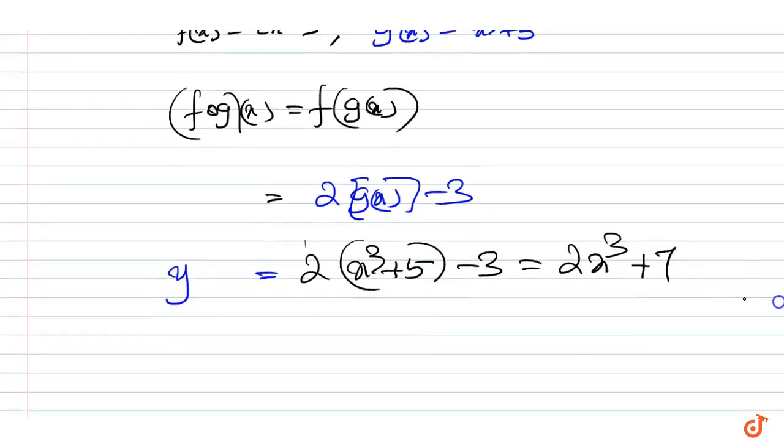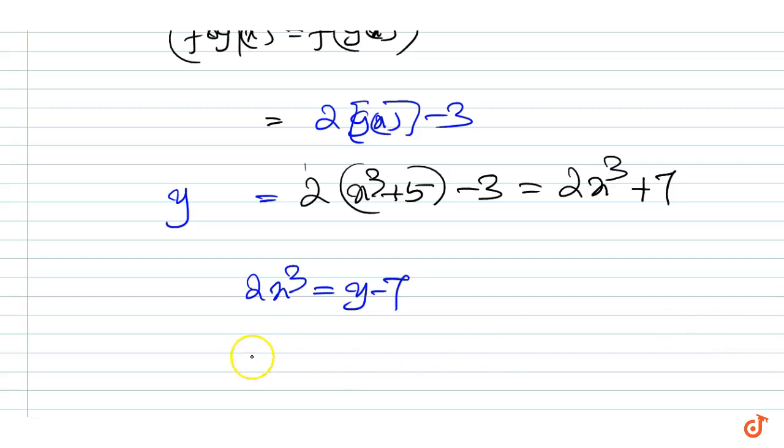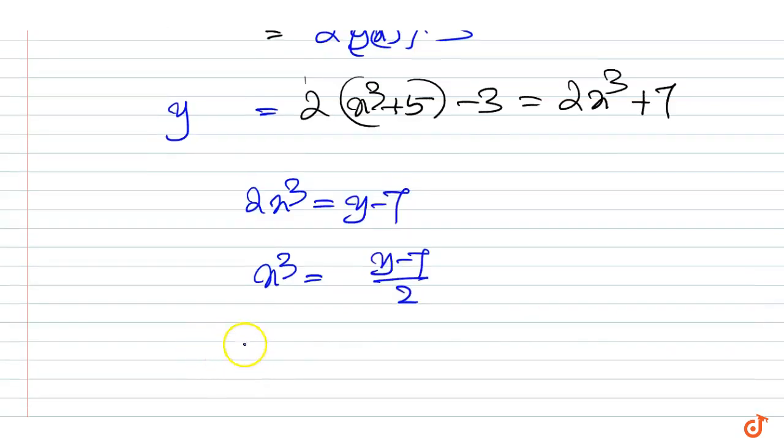Let this be equal to y, then we can write 2x³ = y - 7. That is, x³ = (y - 7)/2. Then, we get x = ((y - 7)/2)^(1/3).